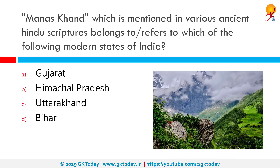Manaskhant, which is mentioned in various ancient Hindu scriptures, is a reference to which of the following modern states of India? The correct answer is Uttarakhand. Literally meaning 'northern land or section' in Sanskrit, the name of Uttarakhand finds mention in early Hindu scriptures as the combined region of Kedarkhand and Manaskhant.